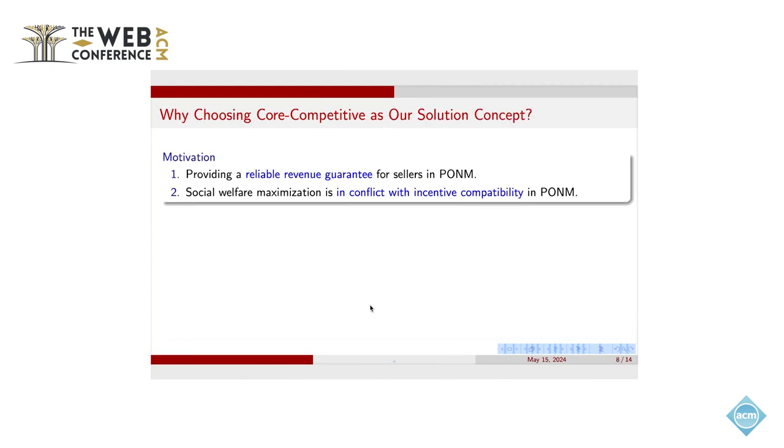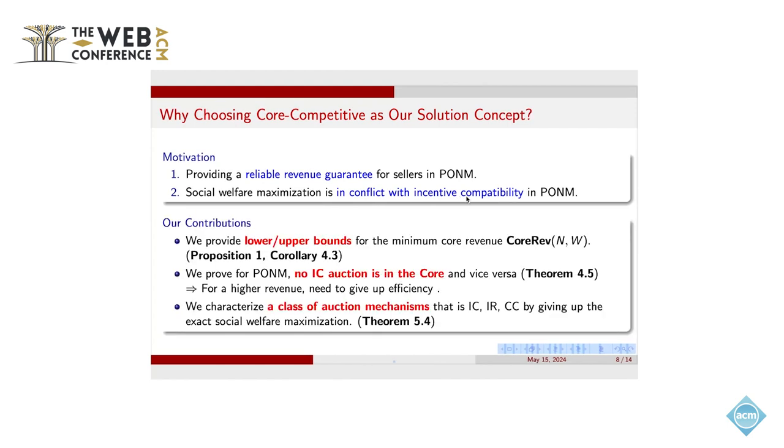So our motivations are twofold. The first one is that we want to provide a reliable revenue guarantee for this new market. The second one is that we still want to preserve the nature of incentive compatibility. Our contribution has three aspects. The first one is that we provide an analysis for the lower bound and the upper bound for the benchmark core revenue. And we also provide the algorithm for computing these bounds. The second contribution is that we proved a bad result that in this new market, there is no IC auction that is in the core and vice versa.